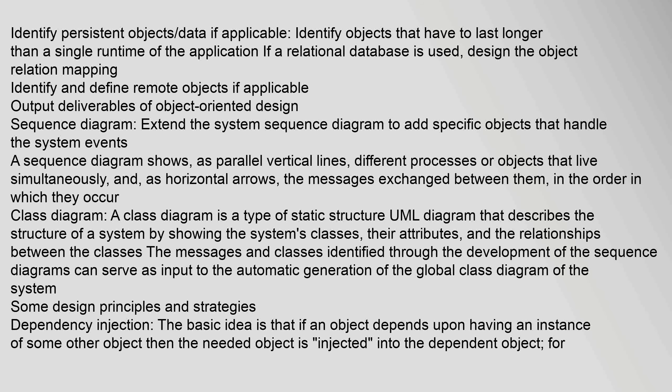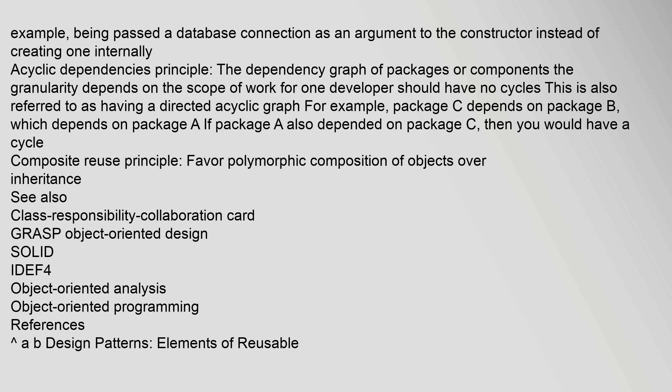Some design principles and strategies: Dependency injection — the basic idea is that if an object depends upon having an instance of some other object, then the needed object is injected into the dependent object. For example, being passed a database connection as an argument to the constructor instead of creating one internally. Acyclic dependencies principle — the dependency graph of packages or components should have no cycles, also referred to as having a directed acyclic graph. For example, if package C depends on package B, which depends on package A, and package A also depended on package C, you would have a cycle. Composite reuse principle: favour polymorphic composition of objects over inheritance.